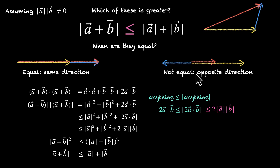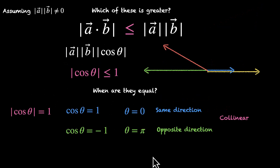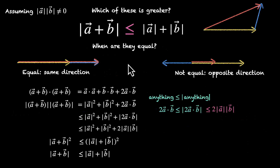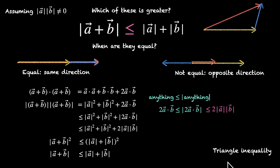I personally prefer the visual proof, but proving this rigorously is also important. What are the names of these inequalities? The first one — mod of A·B is always less than or equal to mod of A times mod of B — is called the Cauchy-Schwarz inequality. The second one — where we deal with the sum, mod of A plus B is less than or equal to mod of A plus mod of B — is called the triangle inequality, probably because it can be proved using a triangle.